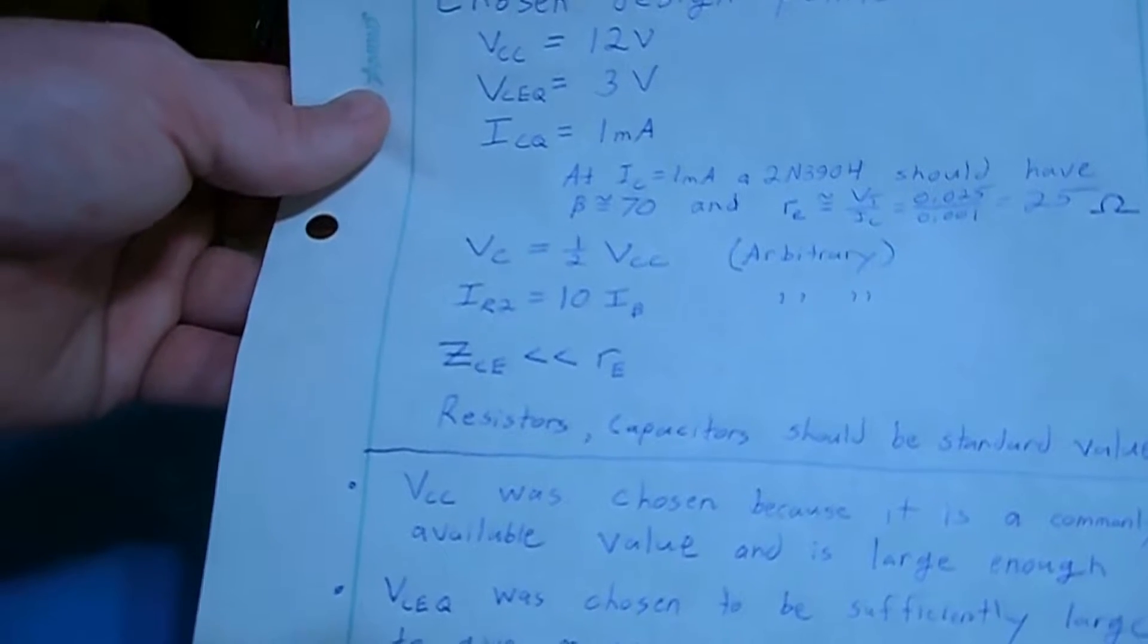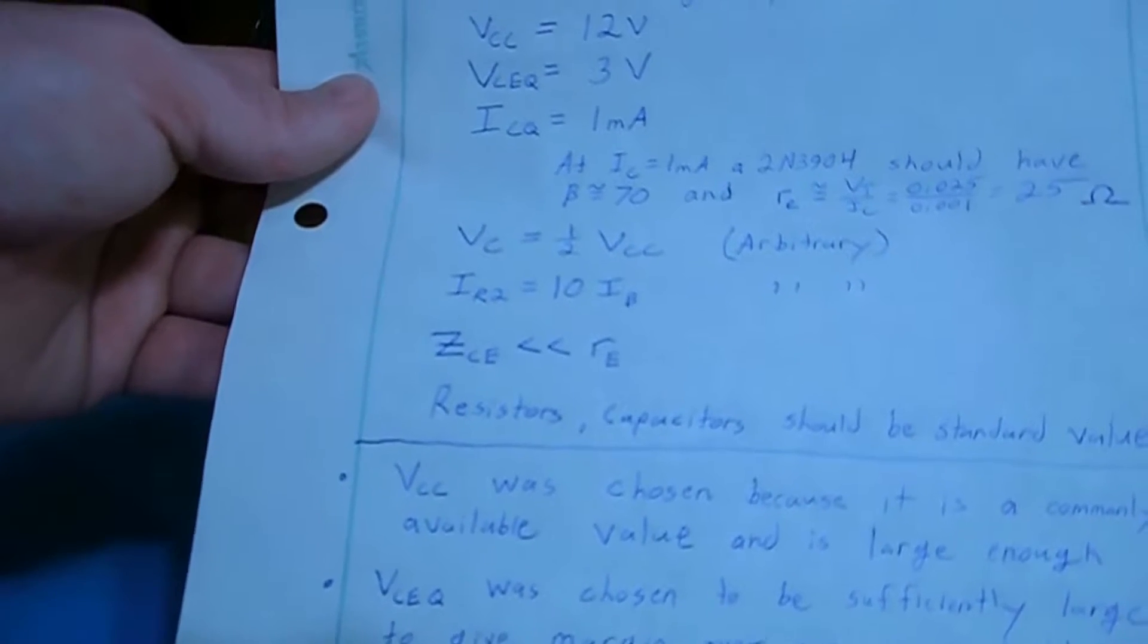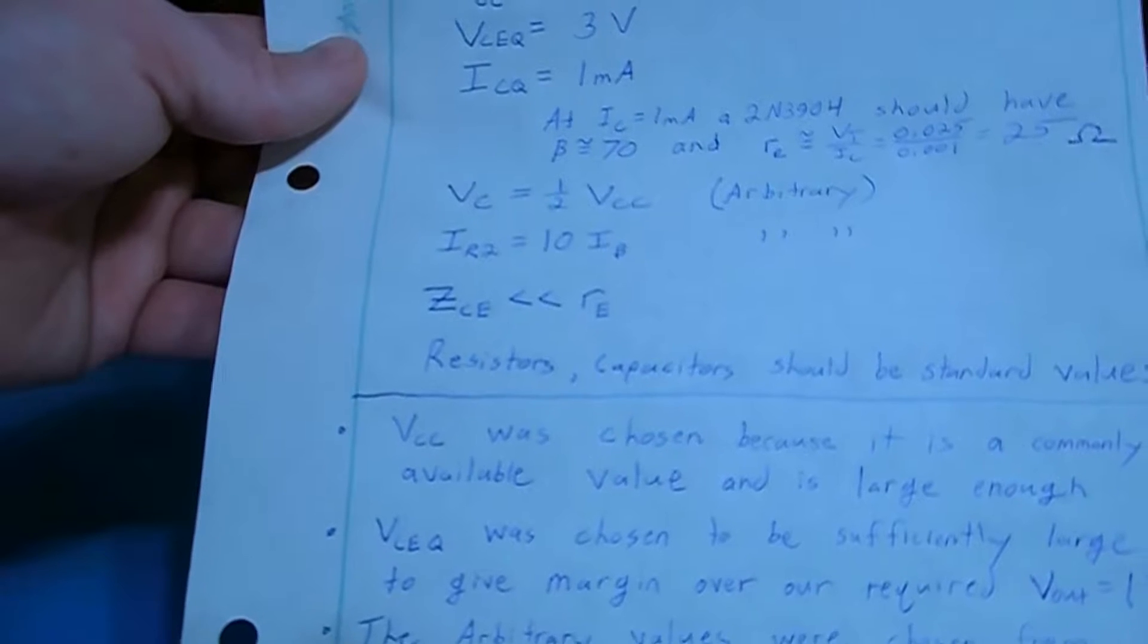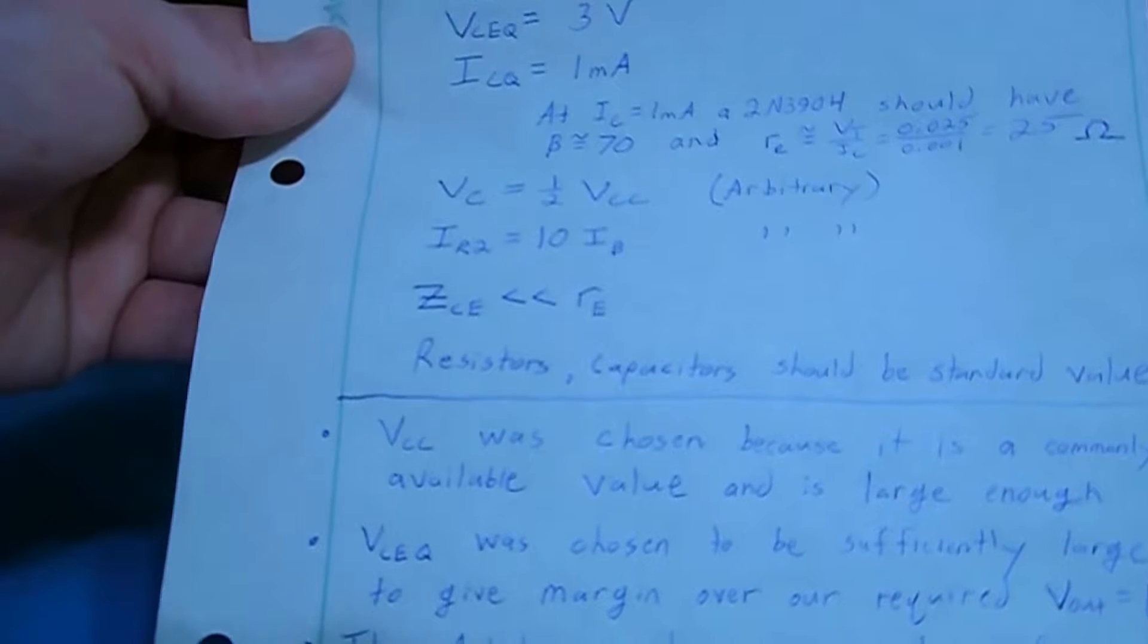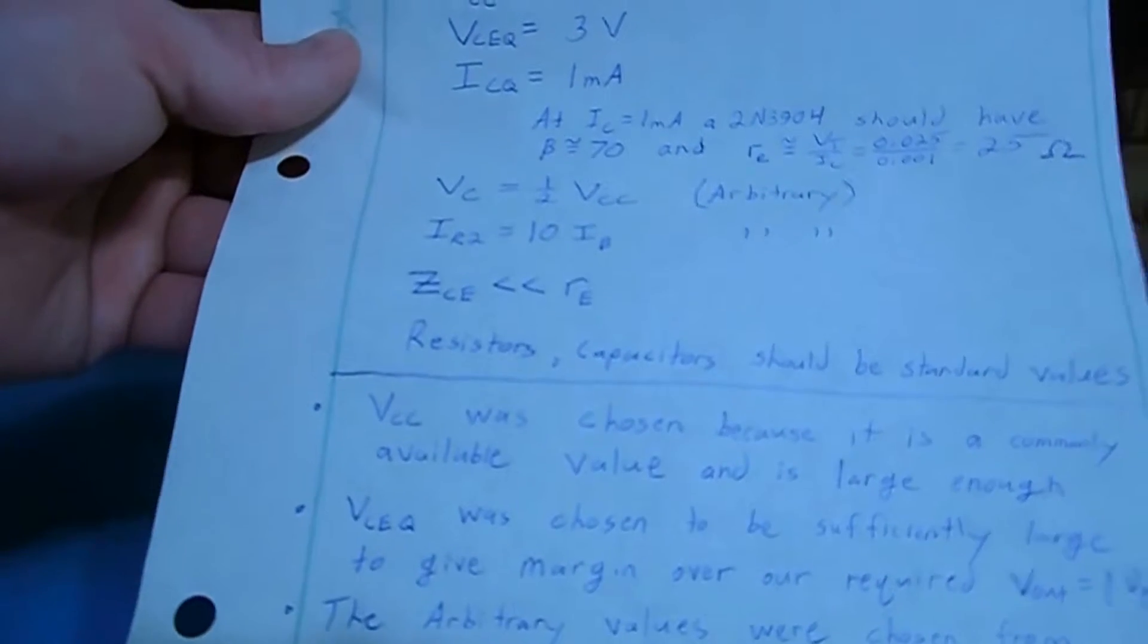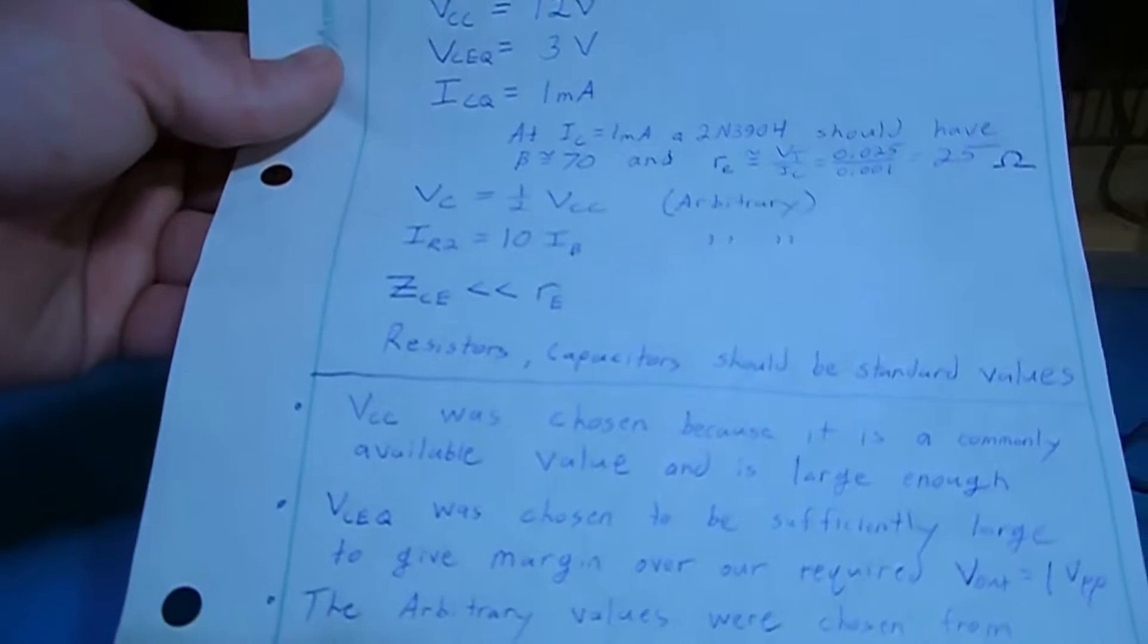And our final arbitrary choice is the impedance of our emitter capacitor CE to be much less than little re. And we're going to choose all of our values of resistors and capacitors to be standard values you can get out of your parts bin.